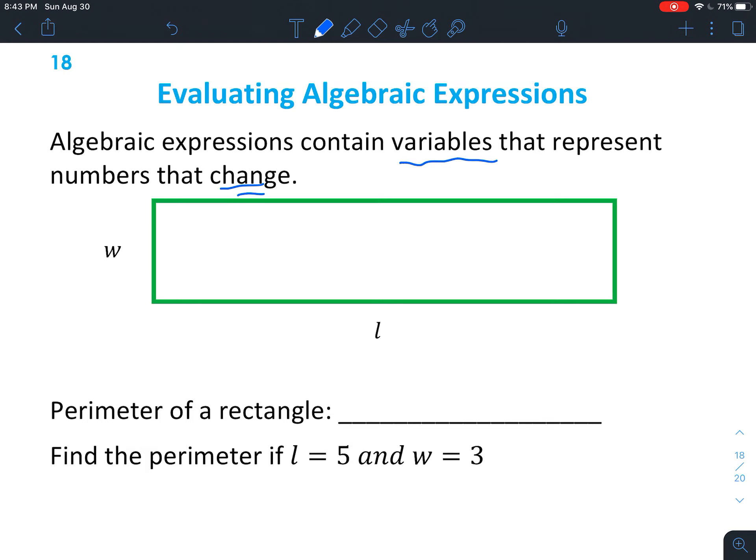So on this one right here, we have a rectangle, and this side is represented with an L for the length, and this side is represented with a W for the width. So no matter what size your rectangle, you're always going to have a length and a width. If you want to find the perimeter of a rectangle, that's essentially when you add up all the sides.